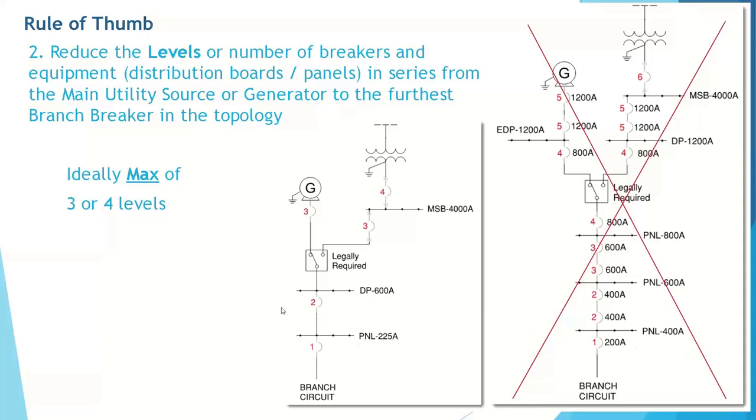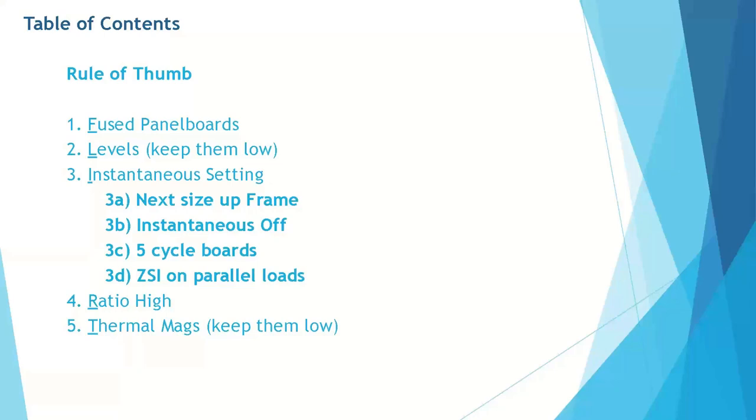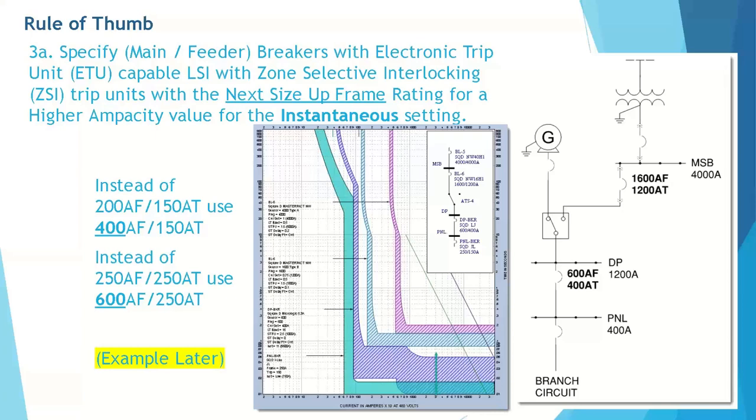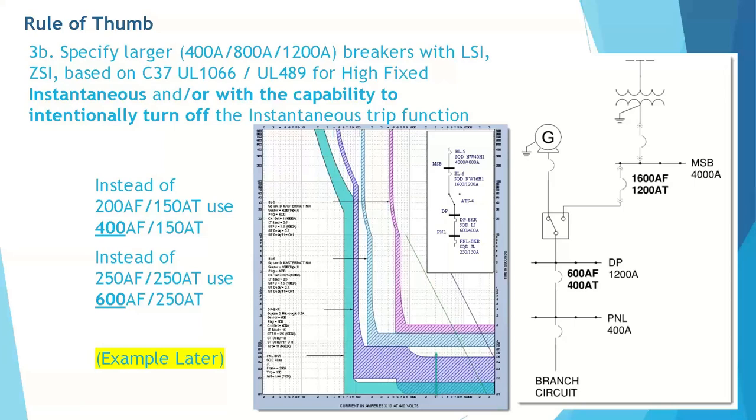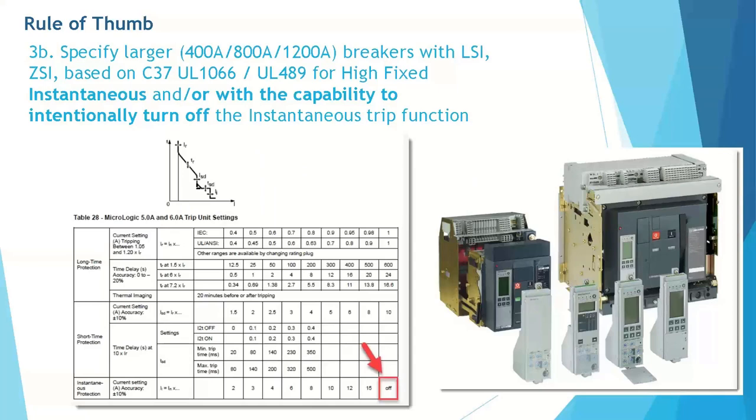This was an example system that we ran into and an optimal solution to that is often to redesign that system. Even though the main breakers have an exception, I would recommend removing the main breakers on feeders or bus risers when they don't meet the ratio test to simplify the system topology. The ideal maximum number of levels that you want in your system to selectively coordinate is three to four, as you can see in the revised single line. For the third rule of thumb for instantaneous adjustability, I broke it up into multiple parts that are very closely related. For 3A, it is necessary at times to provide the next size up frame to get a higher instantaneous setting.